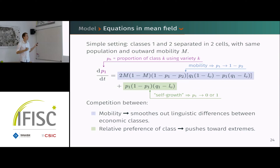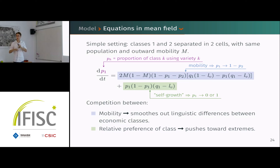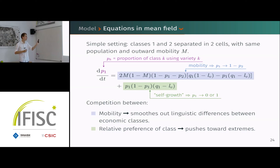In mean field analysis, we simplify to two completely separated cells with the same population and same probability of going out. The variables of interest are the p_k values — the proportion of each class using their own variety. There is a competition between two effects: mobility, which pushes p_1 toward one minus p_2 and smooths out linguistic differences; and a self-growth term, which depends on relative class preference for their own variety and pushes people toward the extremes.